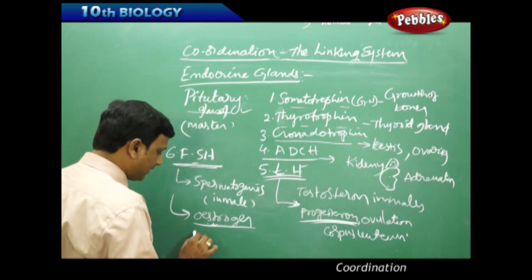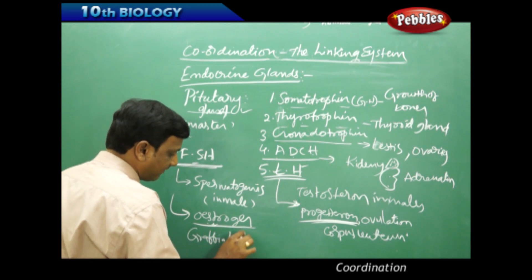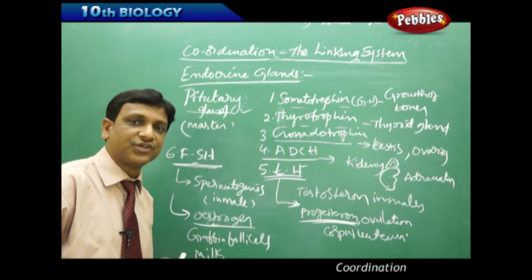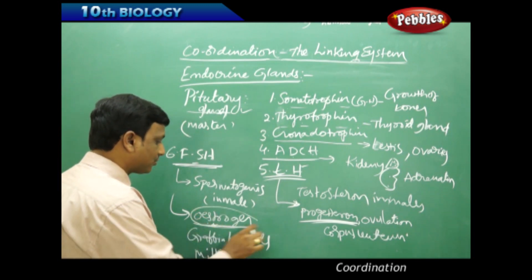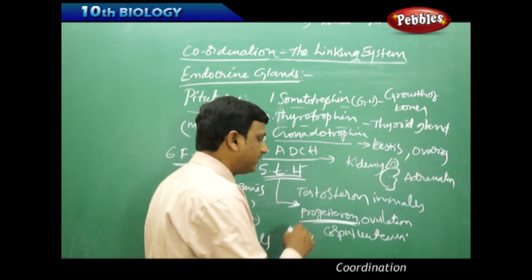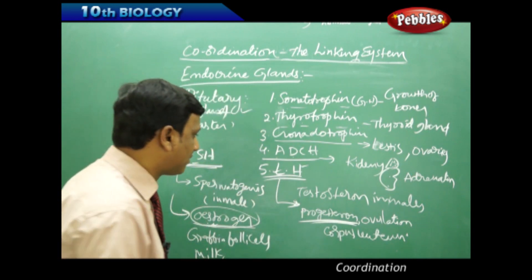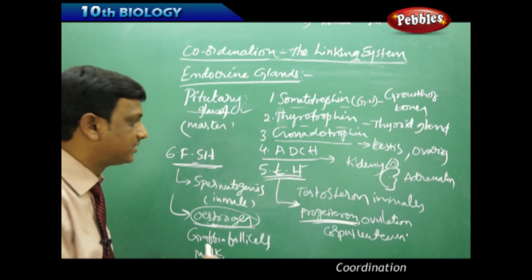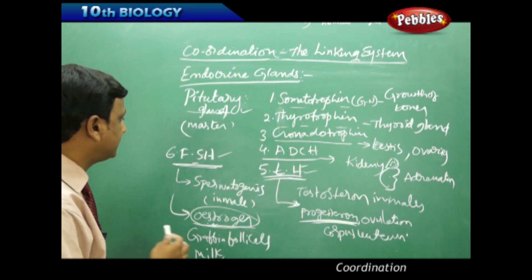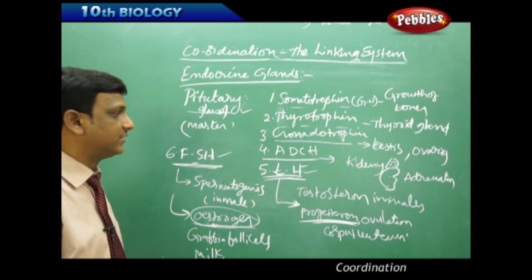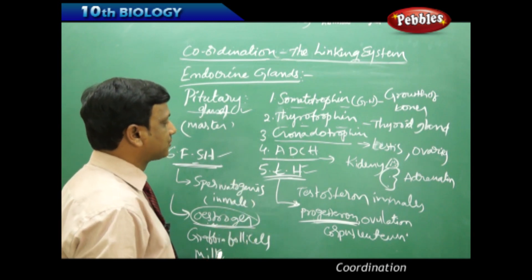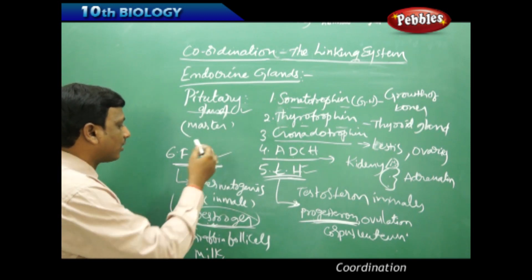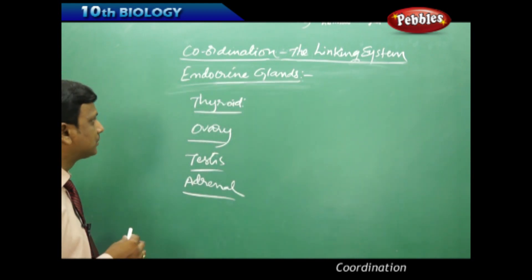Follicle stimulating hormone also helps in the development of Graafian follicles and the production and secretion of milk. Estrogen and progesterone are the two important female reproductive hormones. Progesterone is stimulated by luteinizing hormone, though it is secreted by the ovary. These two hormones — FSH and LH — control and coordinate the reproductive activities in humans. Overall, somatotrophin, thyrotrophin, gonadotrophin, ACTH, LH, and FSH are the hormones secreted by the pituitary gland.